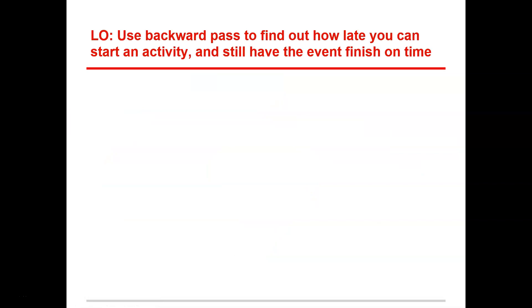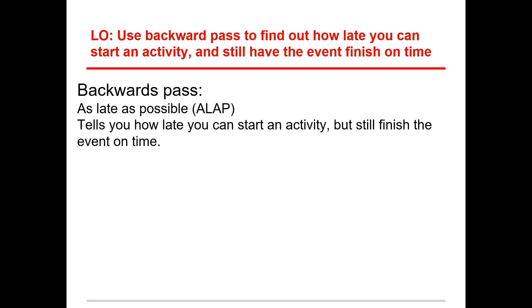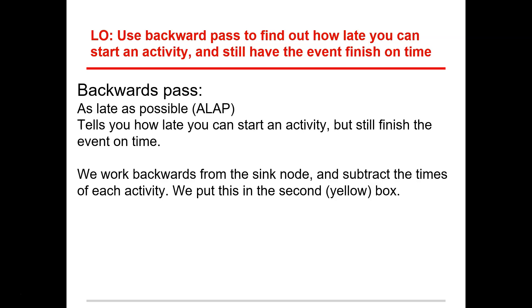So now let's have a look at backwards pass to find out how late you can start an activity and still have the event finish on time. So backwards pass is as late as possible. So when the activity is completed or the duration of the activity has to be finished by this time, no later time, otherwise it'll just start to affect the critical path. So it tells us how late you can start an activity but still finish at the event time.